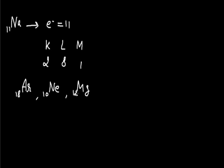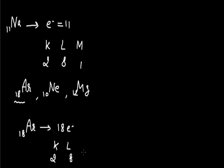Let us now study some more rules by taking the example of argon. Argon has atomic number 18, so it contains 18 electrons. The first 2 go to K shell, the next 8 go to L shell — total 10 distributed. The remaining 8 electrons move to M shell, which has a maximum capacity of 18, so it can easily contain them. The correct configuration for argon is K2, L8, M8.